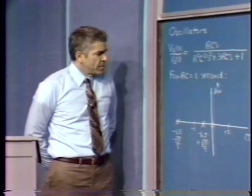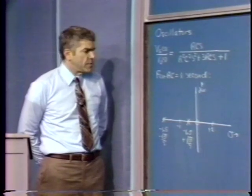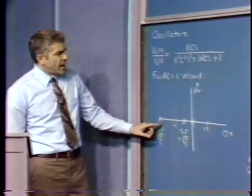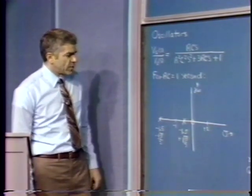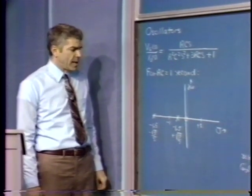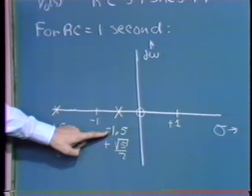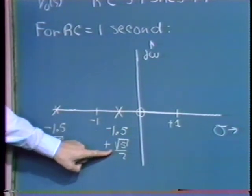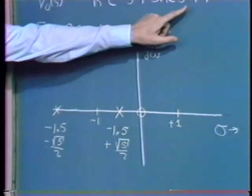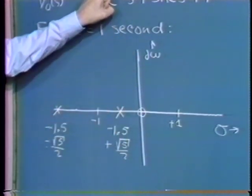We can see the effect of this by drawing a root locus diagram. Let me stress the fact that this is a positive feedback system. I've also normalized things to RC = 1 second. If we factor the denominator of the Wien bridge transfer function — all of the frequency-dependent elements are concentrated in the Wien bridge, and I've assumed the operational amplifier has negligible dynamics — we find that by factoring that denominator, we get poles at s = −1.5 ± √5/2 for the two poles associated with the Wien bridge transfer function. And there is a zero at the origin reflecting the numerator.